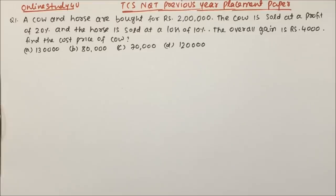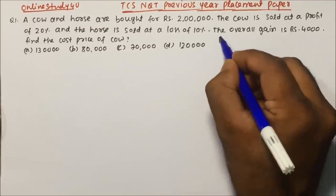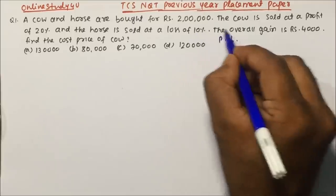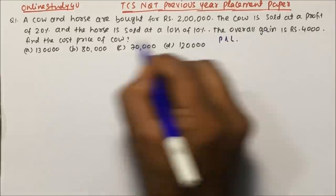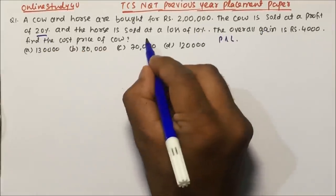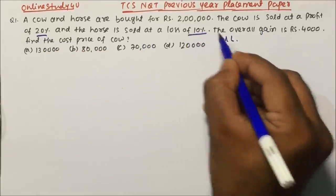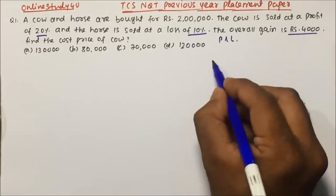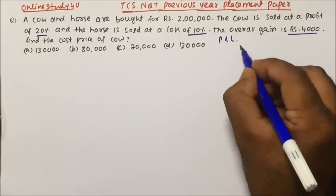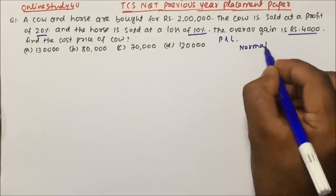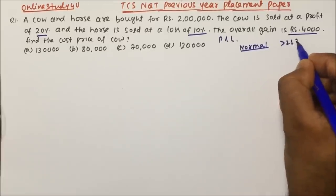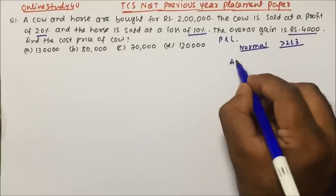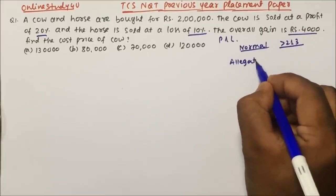Let's start with question number one, which is a question of profit and loss. A cow and horse are bought for rupees 2 lakhs. The cow is sold at a profit of 20% and the horse is sold at a loss of 10%. The overall gain is rupees 4000. Find the cost price of the cow. If you solve this by the normal method it will take more than 2 to 3 minutes, so I'm going to solve this by the allegation rule which will take less than 30 seconds.